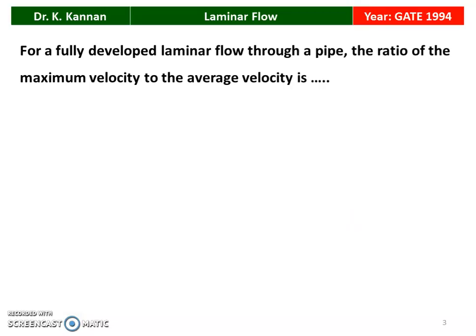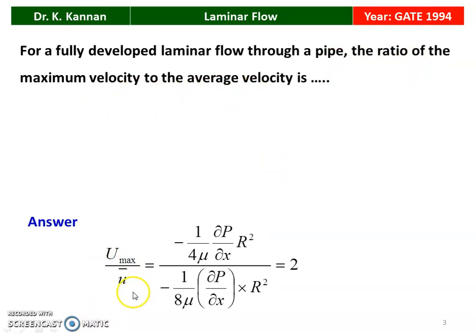First question from the 1994 question paper: for fully developed laminar flow through a pipeline, the ratio of maximum velocity to average velocity. Maximum velocity is given by minus 1 by 4μ · ∂p/∂x · r², and mean velocity is minus 1 by 8μ · ∂p/∂x · r². Simplifying, u_max by u_bar equals 2.